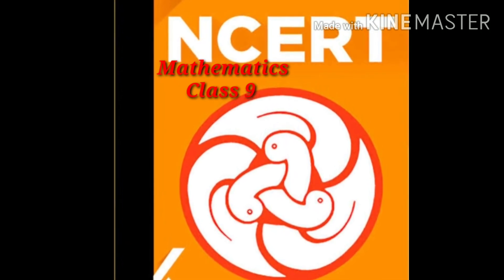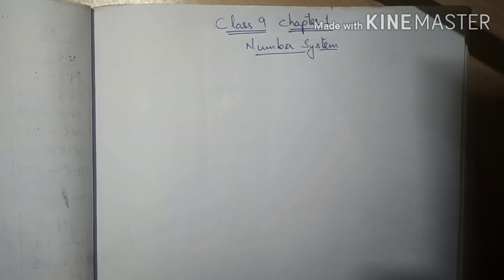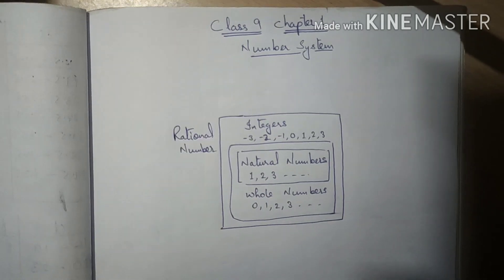Hello everyone, welcome to the first chapter of class 9, that is number systems. First of all, we have natural numbers which start with 1, then we have whole numbers that include 0 along with the natural numbers, then we have integers which include negative numbers also along with the whole numbers.